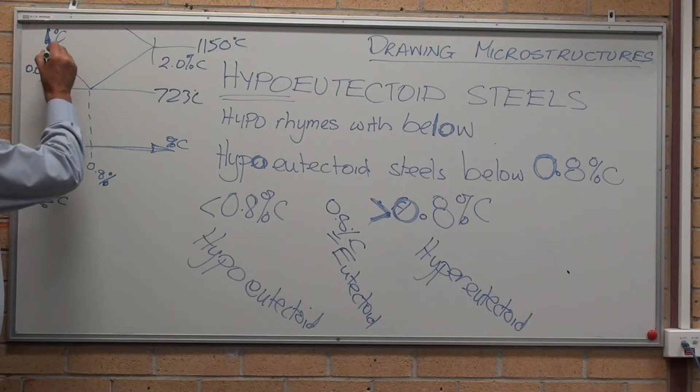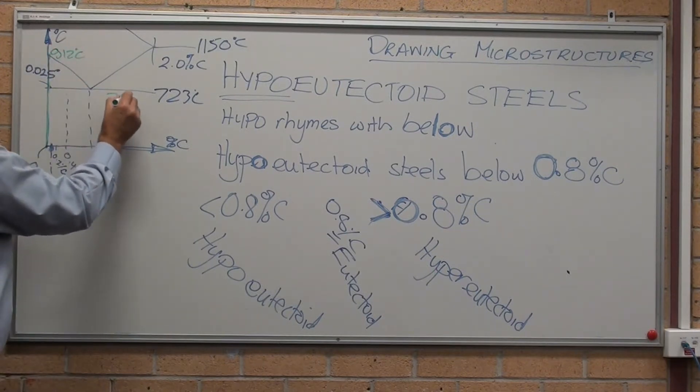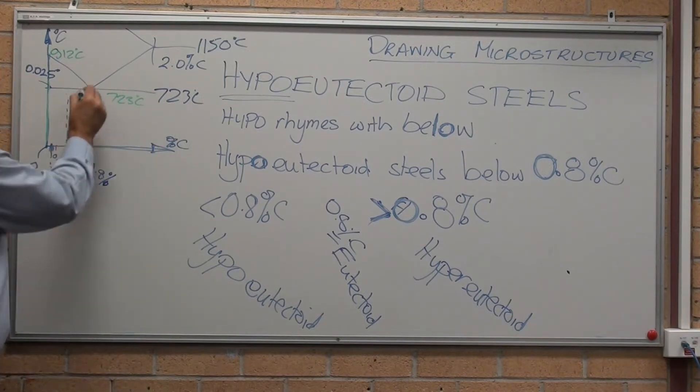Let's now just concentrate on this triangle. That's 912 degrees C, that's 723, I've already got it drawn there, that's 0.8%, that's more or less a straight line.